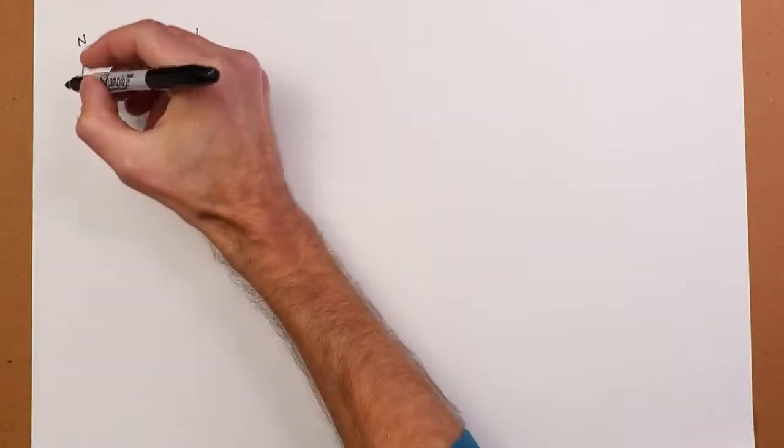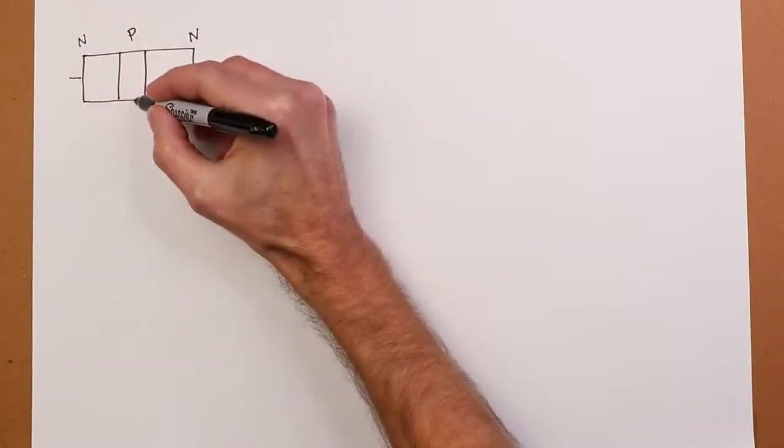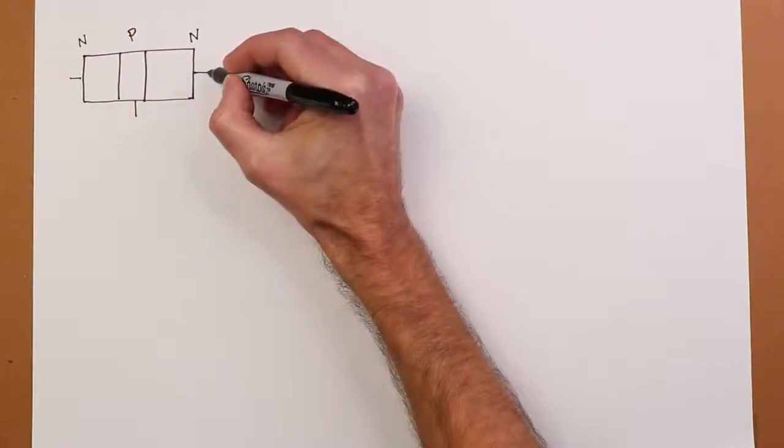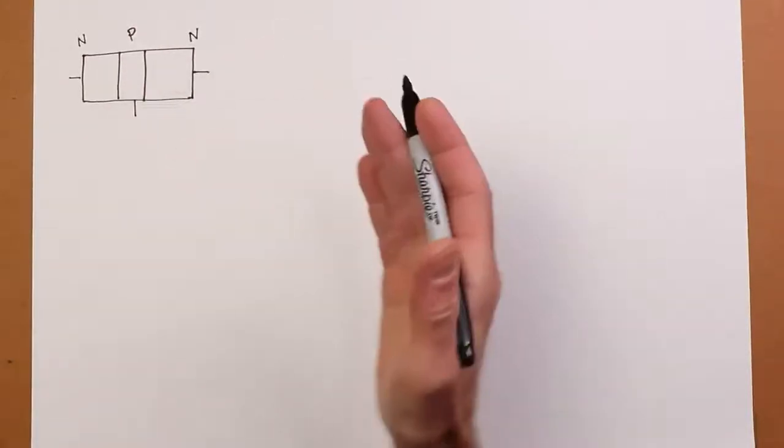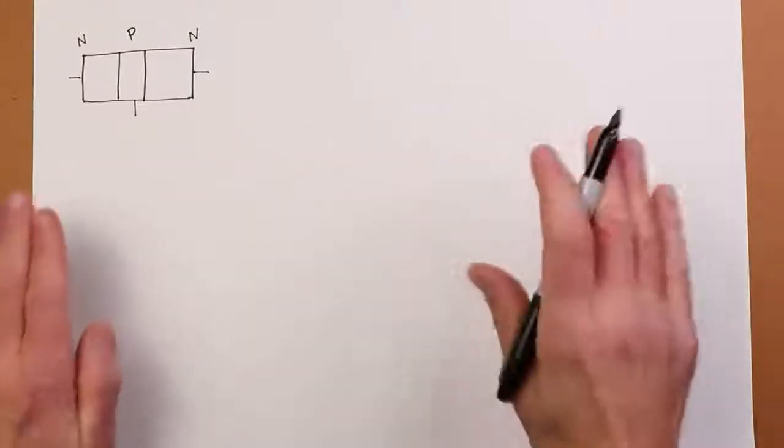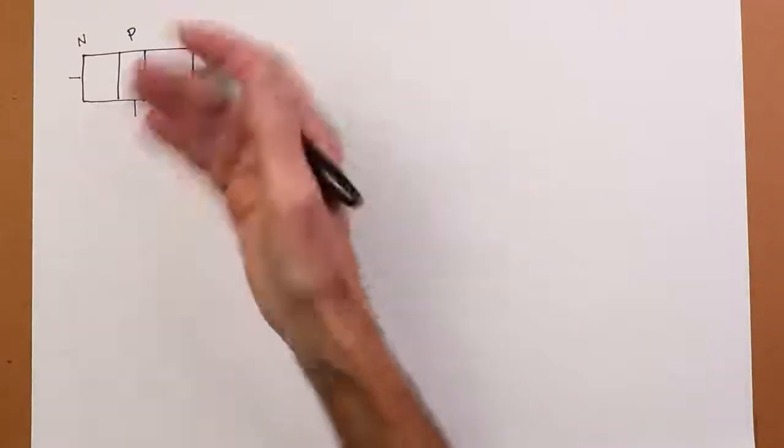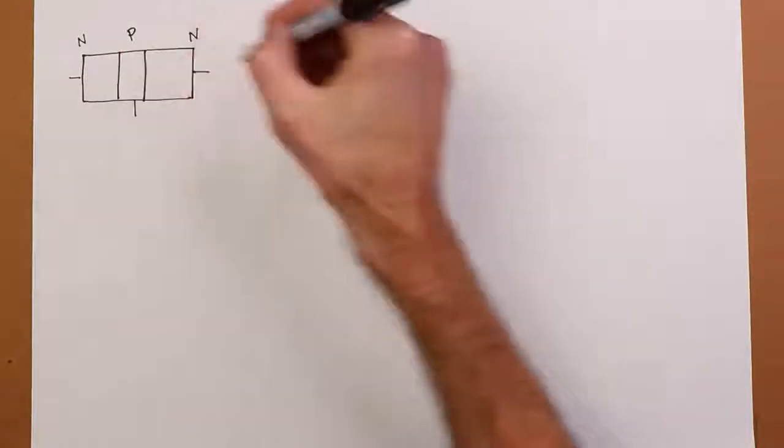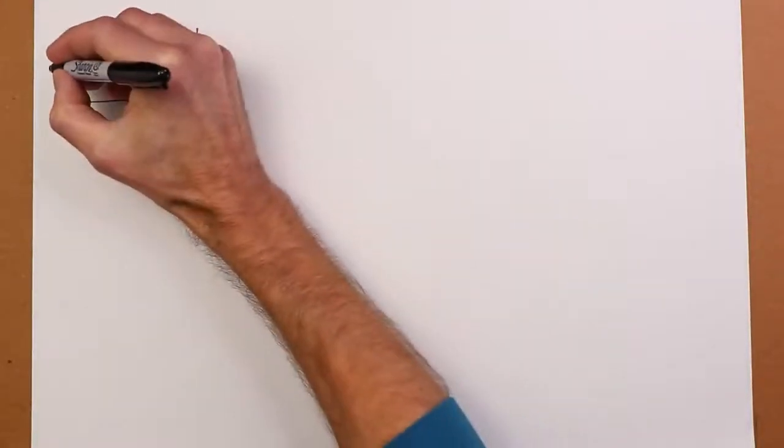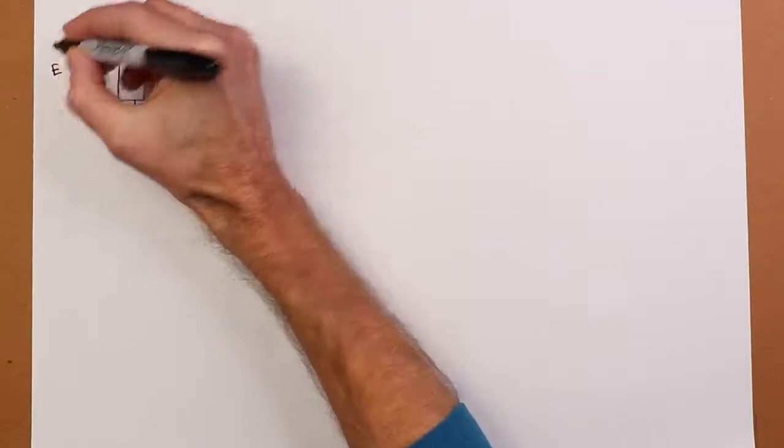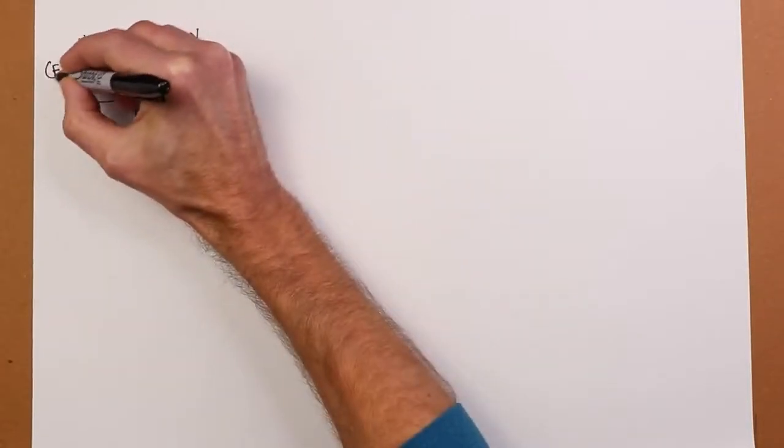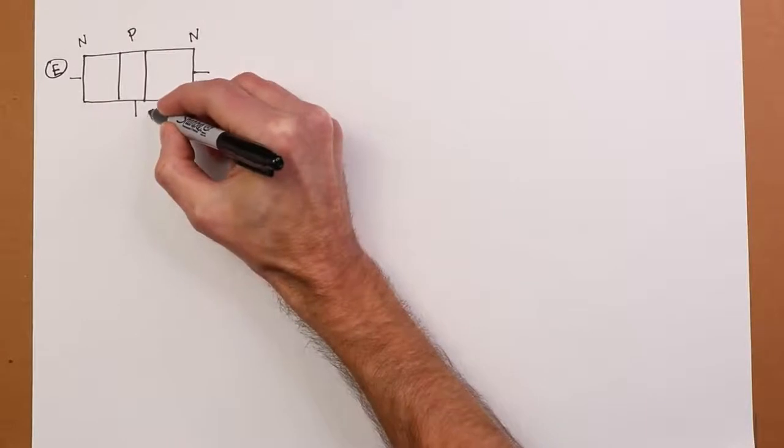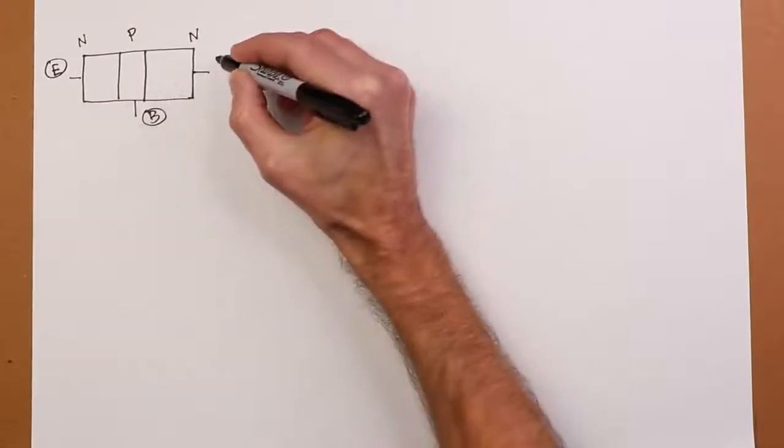We attach a couple of wires to this. Now the transistor is not literally made this way, like a sandwich. It's actually made more in layers. But this is a good visual, so we'll just continue with this. The three connections are going to be called the emitter, let's use a capital E for that, the base, and the collector.